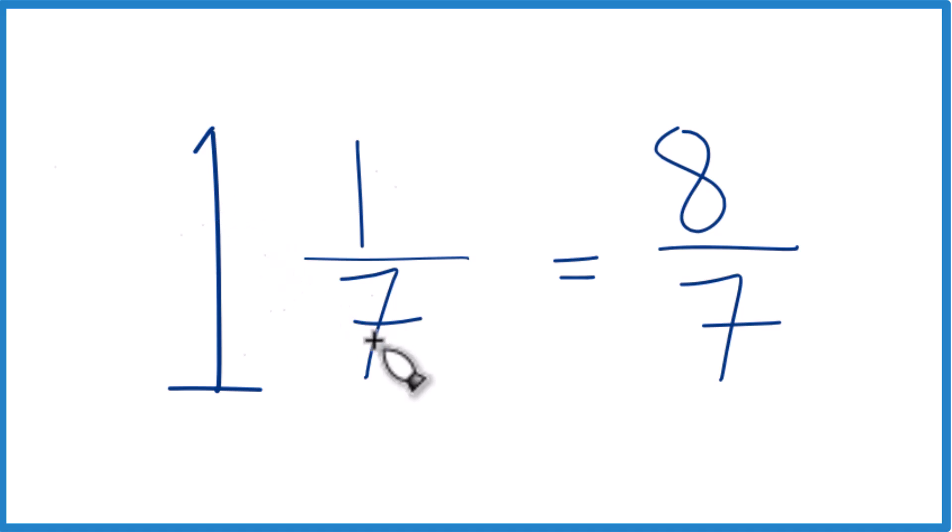Let's do it again. 1 times 7 is 7, 7 plus 1, that's the 8, and we just bring the denominator across, and we're done.